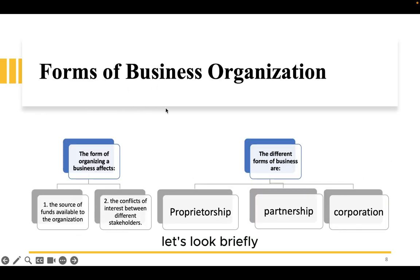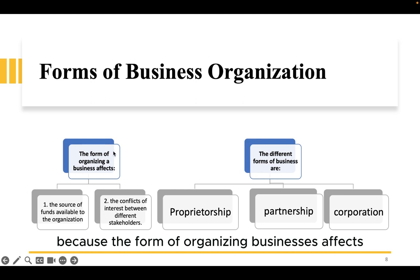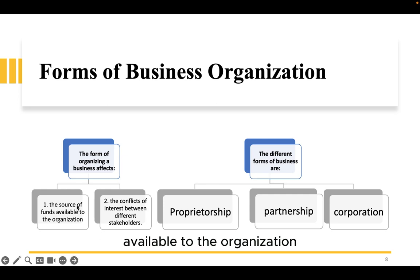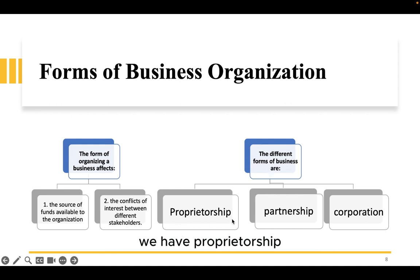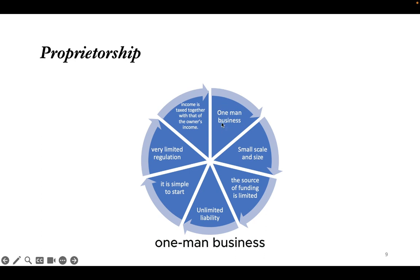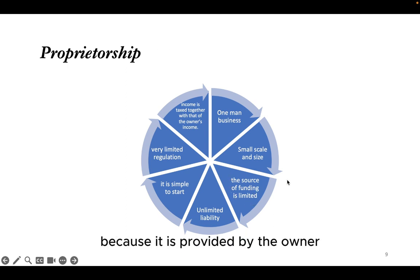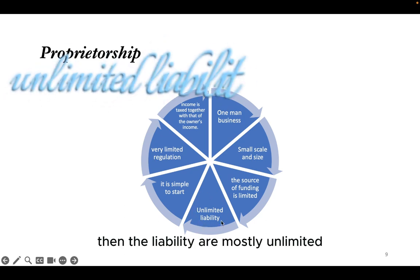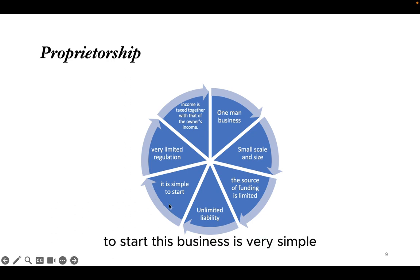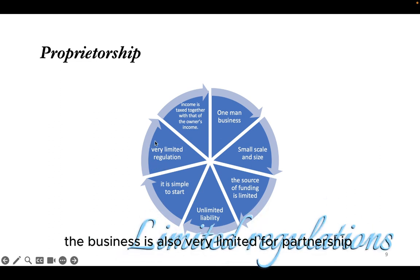To understand corporate finance, let's look at the forms of business organization. The form of organizing a business affects the sources of funds available and the conflict of interest between different stakeholders. The different forms are proprietorship, partnerships, and corporations. A proprietorship, also known as a one-man business, is owned and managed by a single individual. They are normally small in scale, limited in funding — provided by the owner, relatives or friends — liabilities are mostly unlimited and can extend to the personal estate of the owner, and regulation is very limited.